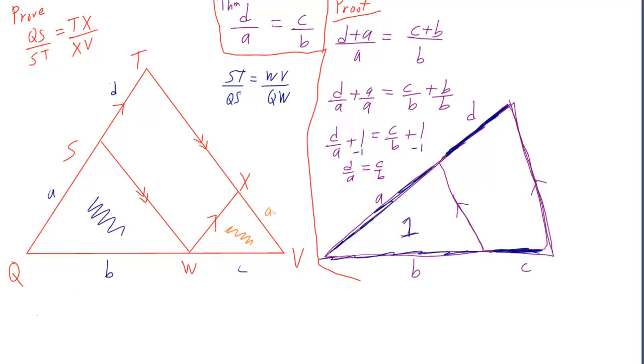So what would be my a? It would be that. What would be my d? It would be that. What would be my b? Well, now it would be this one. And what would be my c? Now it would be that one.